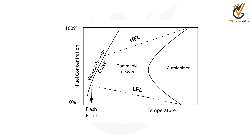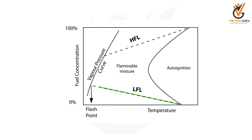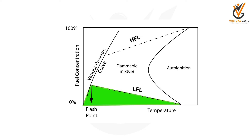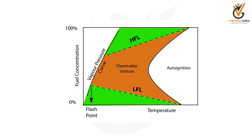Below the lower flammable range, it cannot catch fire — we call it too thin a concentration. Above the higher flammable range, we call it too high a concentration. So in between the lower flammable limit and the higher flammable limit is called the range of flammability. Below the lower flammable range it is too thin; above the higher flammable range it is too high; and in between is the flammable range.